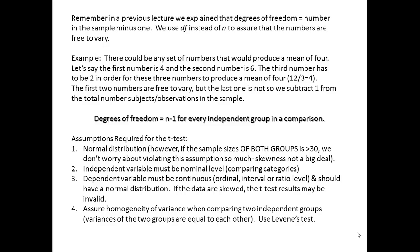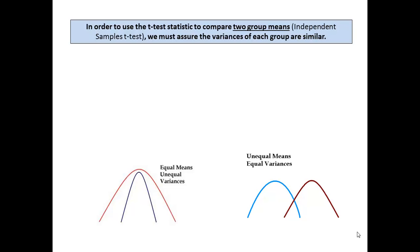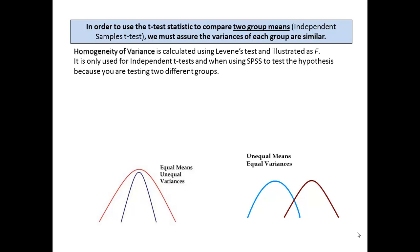Assumption four: we have to assure homogeneity of variance when comparing two independent groups. If we're comparing group A to group B, we have to be sure that the observations or sample has equal variance to each other. To do that, we conduct a special test called the Levene's test. In order to use the t-test statistic to compare two different group means — which we call an independent samples t — we must assure that the variances of each group are similar.